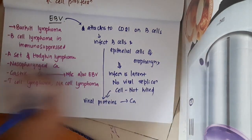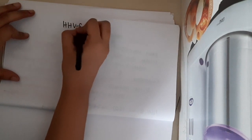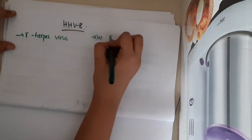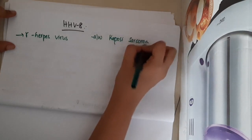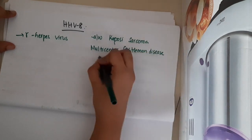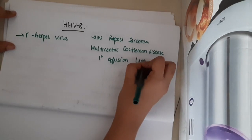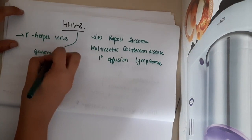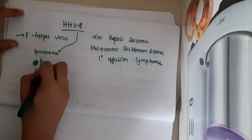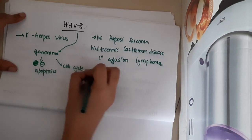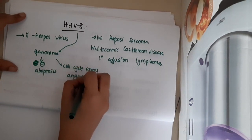Human herpes virus 8 is a gamma herpes virus associated with Kaposi sarcoma, multicentric Castleman disease, and primary effusion lymphoma. The HHV8 genome expresses genes which inhibit apoptosis, cause cell cycle entry, and cause angiogenesis, resulting in tumors.